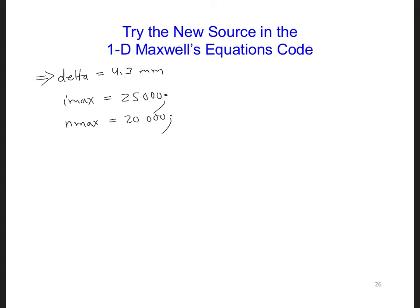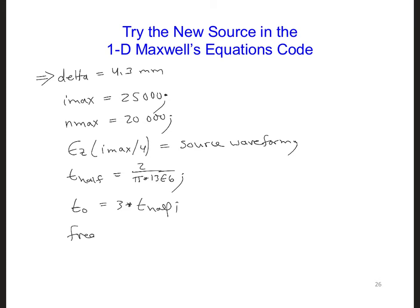Lastly, set the same EZ component, so EZ at IMAX divided by 4. And we're going to set that equal to the Gaussian modulating a sinusoid waveform expression that we developed that has spectra from 902 to 928 megahertz. So I'm just going to write here the source waveform and you can fill that in during the time stepping loop. For this Gaussian modulating a sinusoid, we used T half is 2 over pi times 13E6. And we used T naught is 3 times T half. And we used the center frequency of the sinusoid is 915E6.